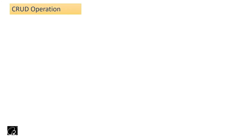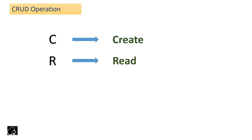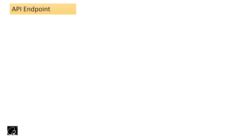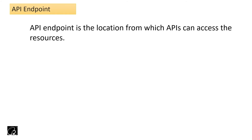In web services, the operations we perform are called CRUD operations: C for Create (adding a record to the server), R for Read (fetching or getting data), U for Update, and D for Delete. We'll see how these operations are performed using REST API with examples. Before that, let's talk about API endpoints. An API endpoint is a location from which APIs can access the resources, or a point where two pieces of software can communicate with each other.